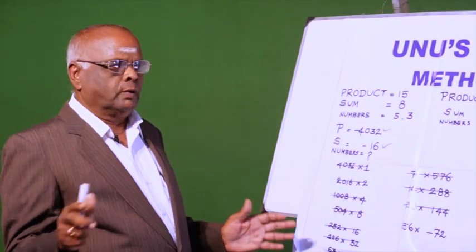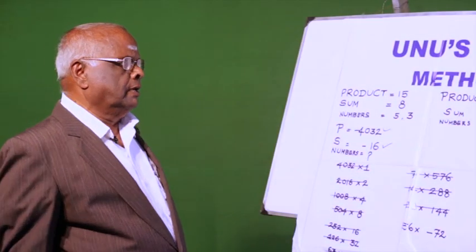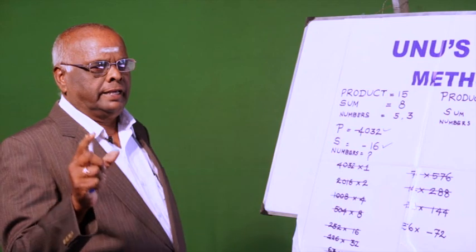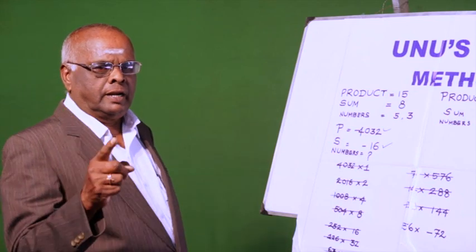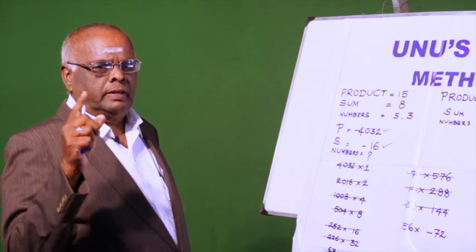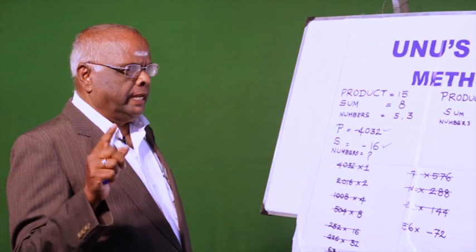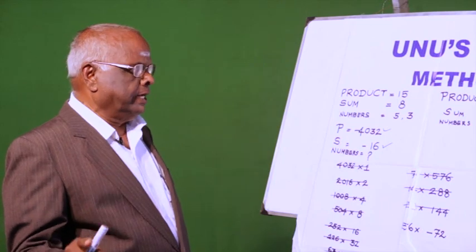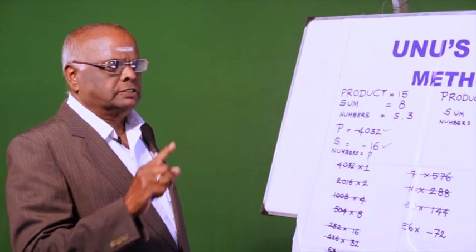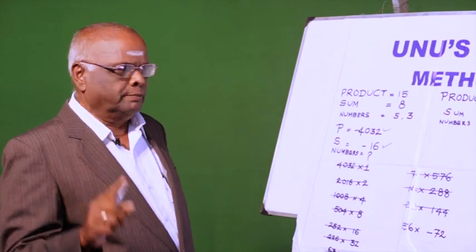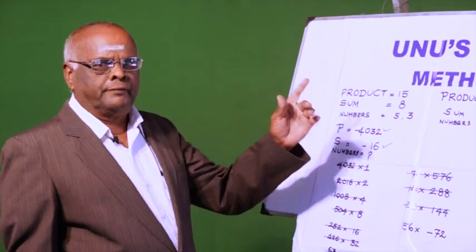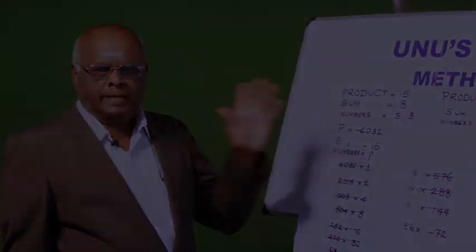This method is a right royal method to find out the factors. This method was invented by Mr. N. Umatanu and is named after him — that is, UNU's method of factorization.